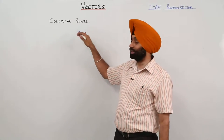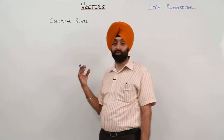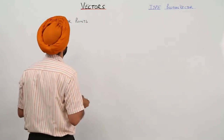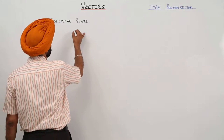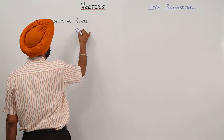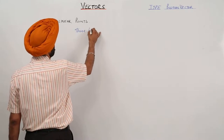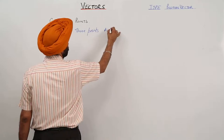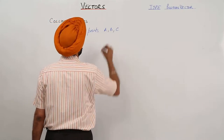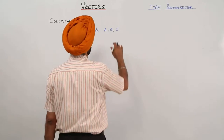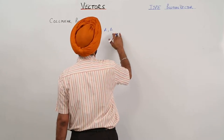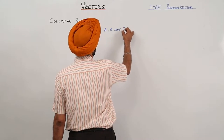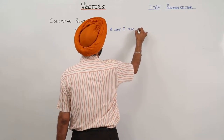Collinear points. The word collinear means on the same line. Three points — point A, point B, and point C — are collinear if they all lie on the same line.